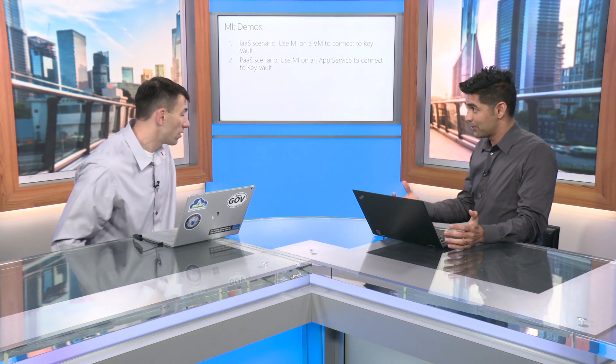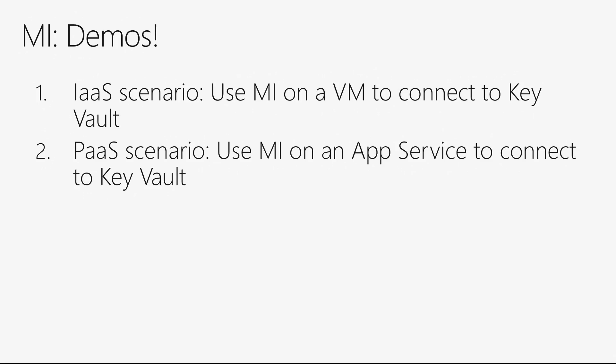So we have a couple of demos lined up. The first is an IaaS scenario using a virtual machine — we'll assign a managed identity to it and use that identity to read a secret from the Key Vault, and we'll create a new access policy in Key Vault so the identity is authorized. The second is a PaaS scenario with a web app — we'll create a web app, enable the managed identity, and do the same thing reading a secret from Key Vault, but in a PaaS service.